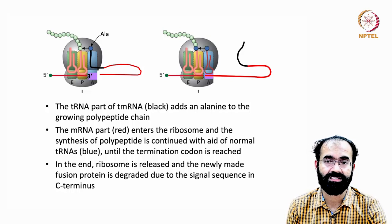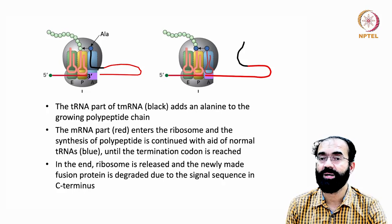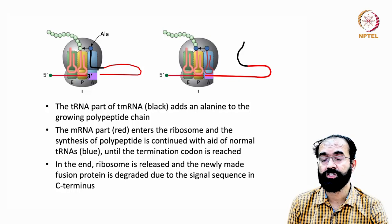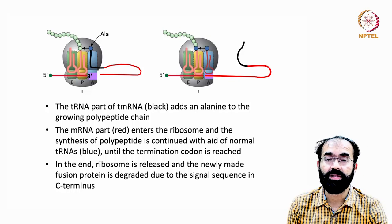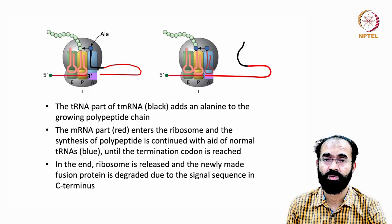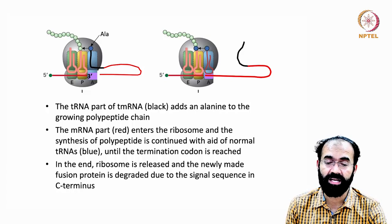The newly made fusion protein is then degraded due to a signal sequence added to its C-terminus. Normally a protein starts from the N-terminus; at the C-terminus, a bunch of amino acids have been added by the codons present in the mRNA part of tmRNA. This addition of a few amino acids marks the protein for degradation — like a tag — so the cell's degradation machinery recognizes it and destroys the unwanted protein.